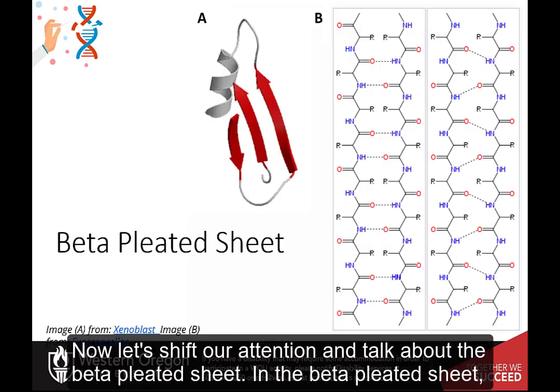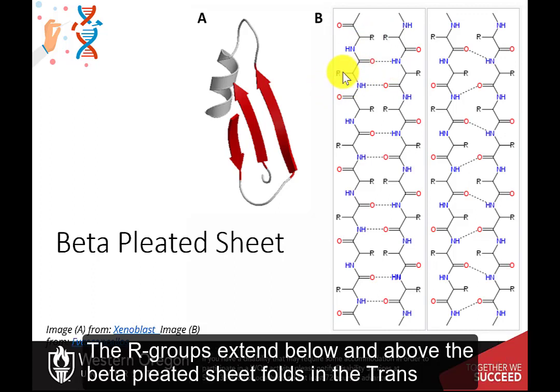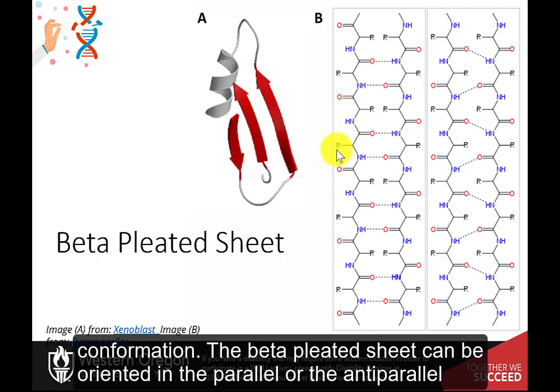Now let's shift our attention and talk about the beta-pleated sheet. In the beta-pleated sheet, the pleats are formed by hydrogen bonds between the backbone of the polypeptide chain. The R groups extend below and above the beta-pleated sheet folds in the trans conformation.